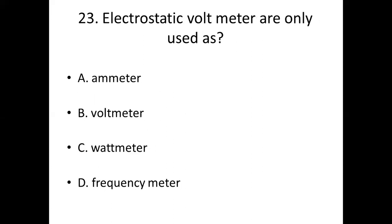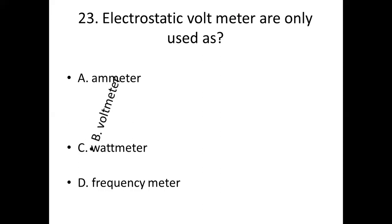23rd bit: Electrostatic voltmeters are only used as dash. Option A: Ammeter. Option B: Voltmeter. Option C: Wattmeter. Option D: Frequency Meter. Answer — Option B: Voltmeter.